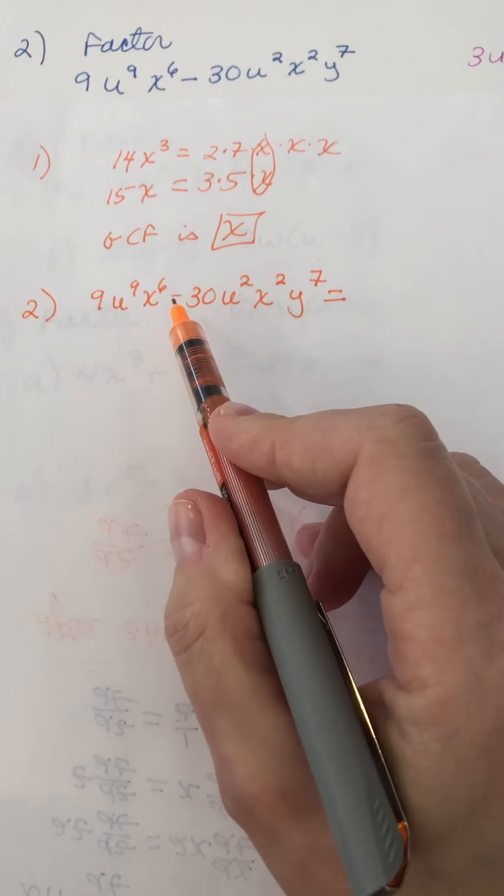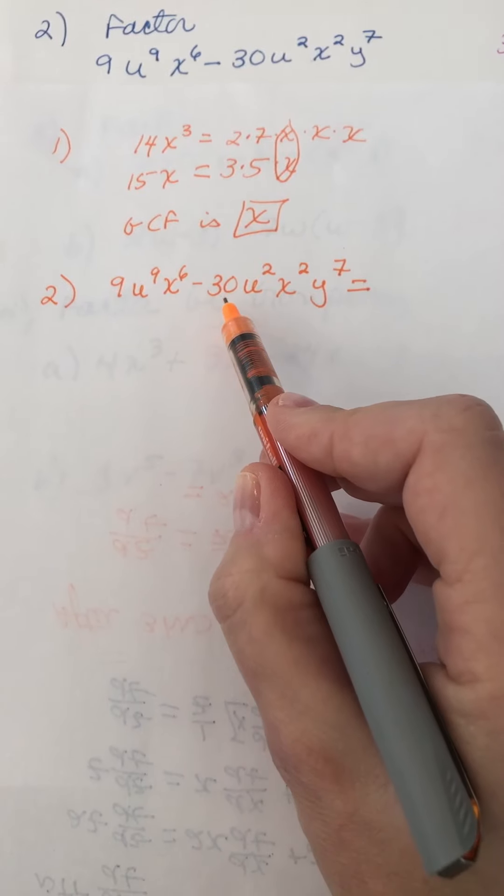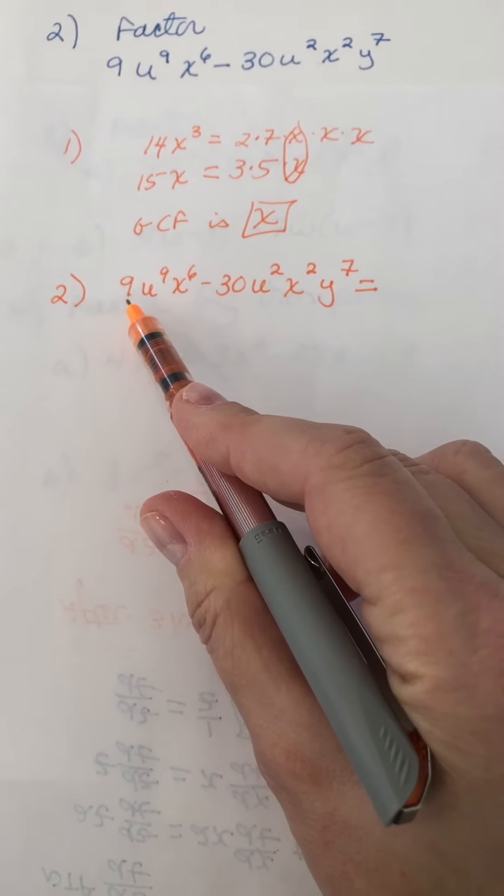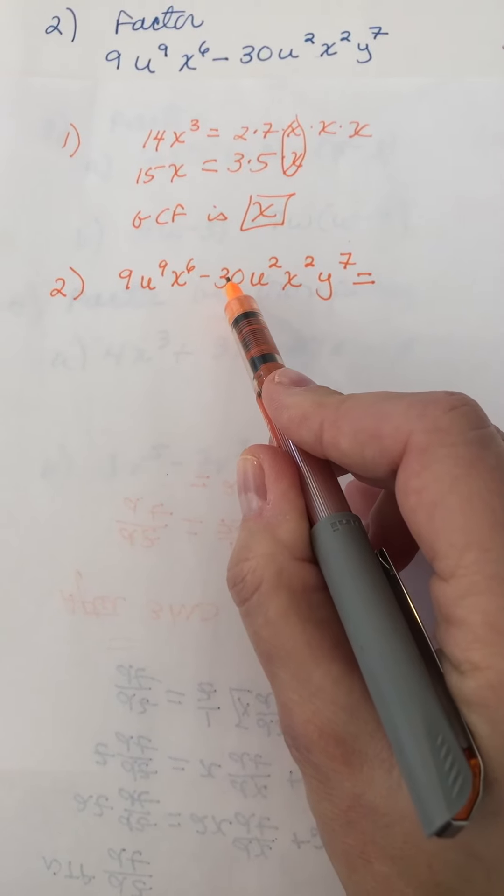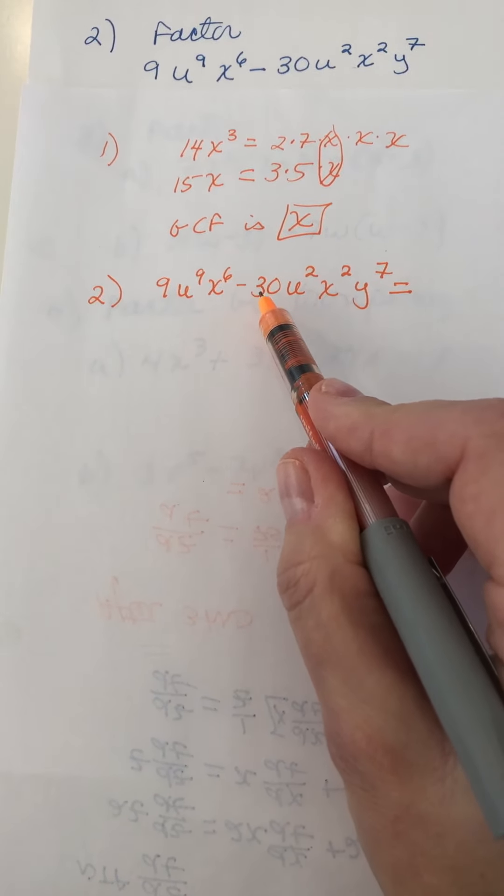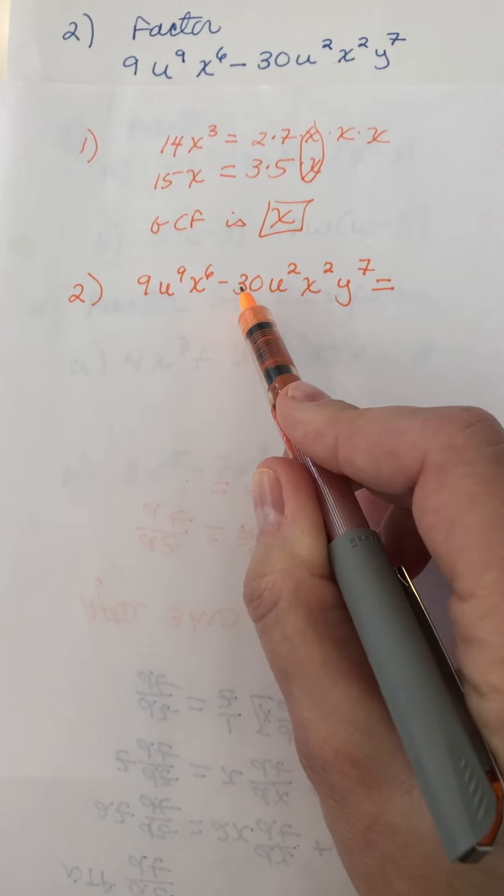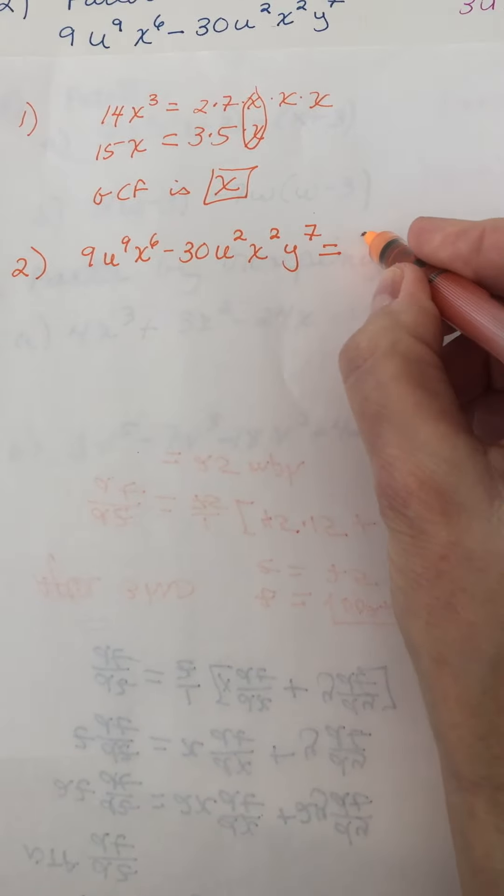We want to look and see what does 9 and 30 have in common. 9 is 3 times 3, and 30 is 3 times 10. 10 is 2 times 5, so that's 3 times 2 times 5. There is a factor of 3 in common.